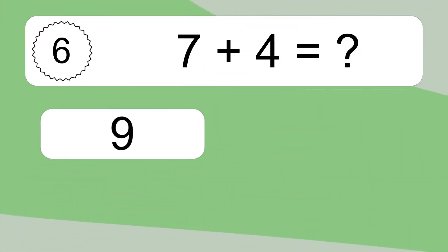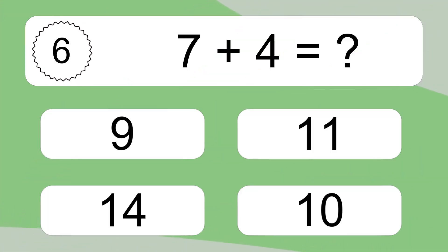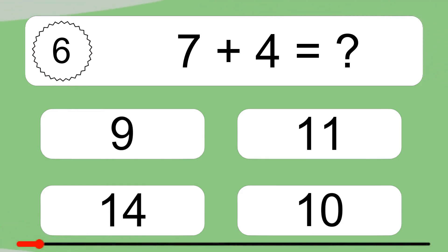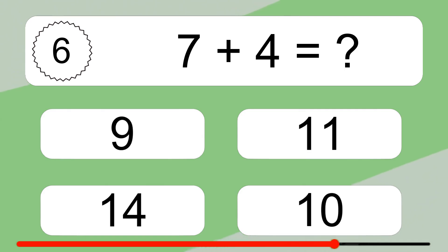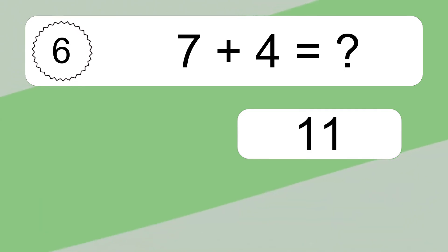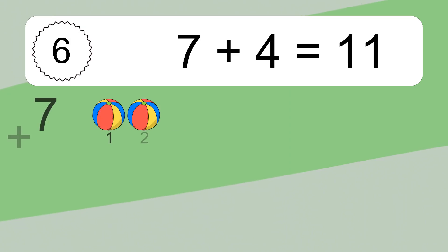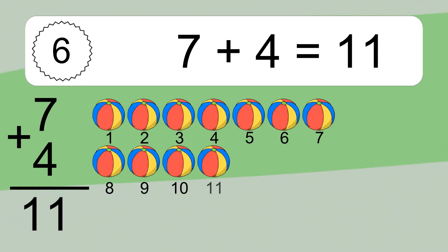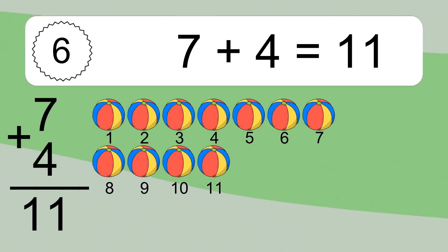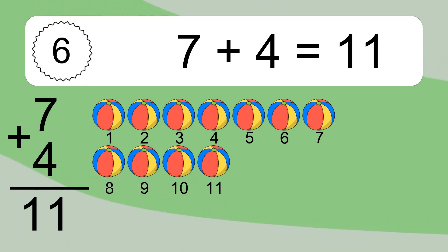7 plus 4 equals what? 7 plus 4 equals 11. Let's count it. 1, 2, 3, 4, 5, 6, 7, 8, 9, 10, 11.